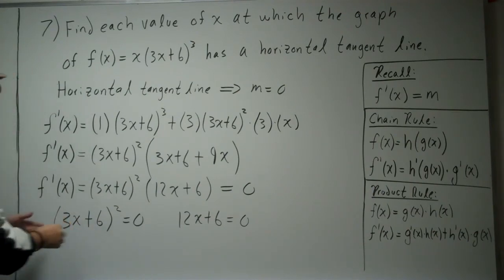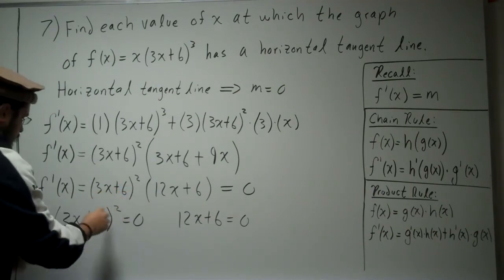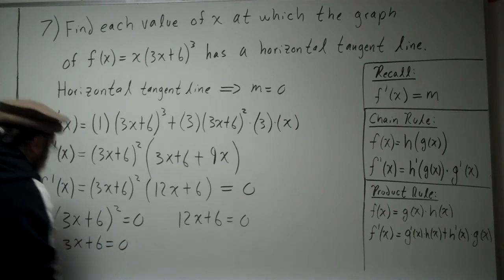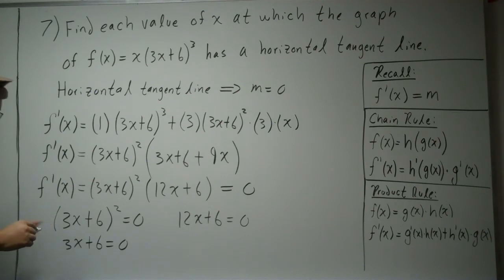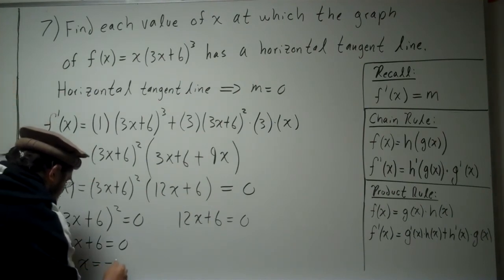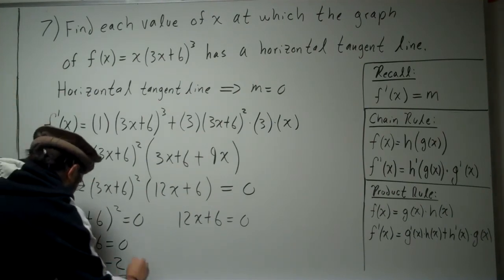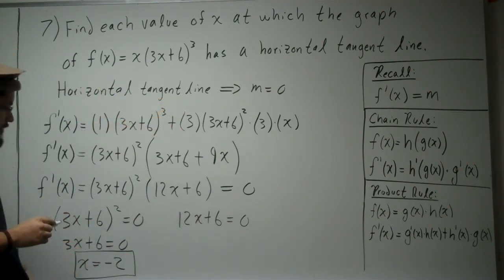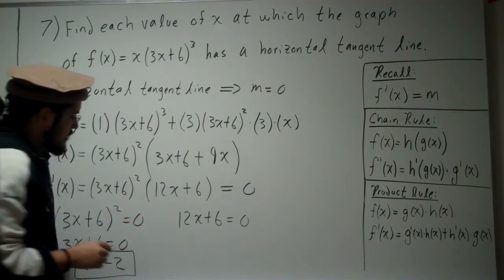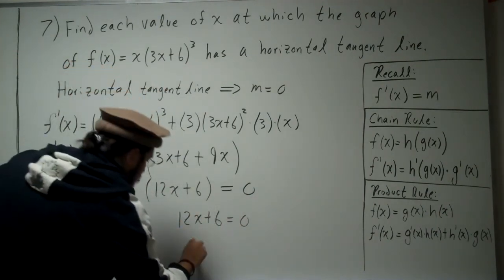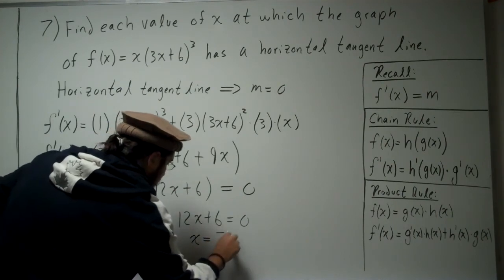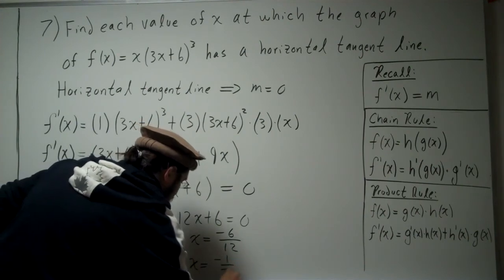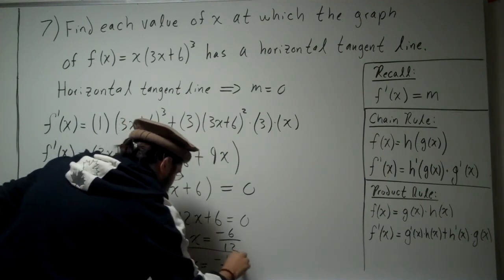Let's go ahead and solve. For (3x+6)² = 0: square root both sides, so 3x + 6 = 0. Move the 6 to the other side and divide by 3, giving x = -2. For 12x + 6 = 0: move the 6 over and divide by 12, giving negative 6 divided by 12, which is x = -1/2.